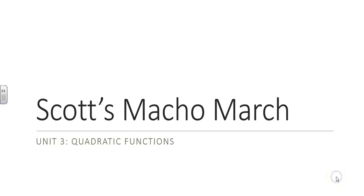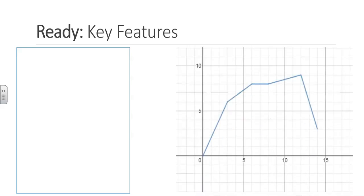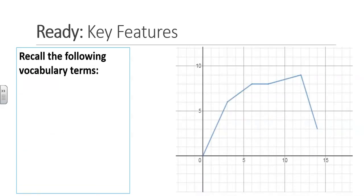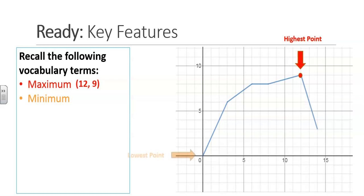In your assignment for 1.3, you are asked to find key features of the functions provided. Recall the following vocabulary terms. A maximum is the highest point of the function. In this function, the highest point is (12, 9). A minimum is your lowest point. In this function, the minimum is (0, 0).